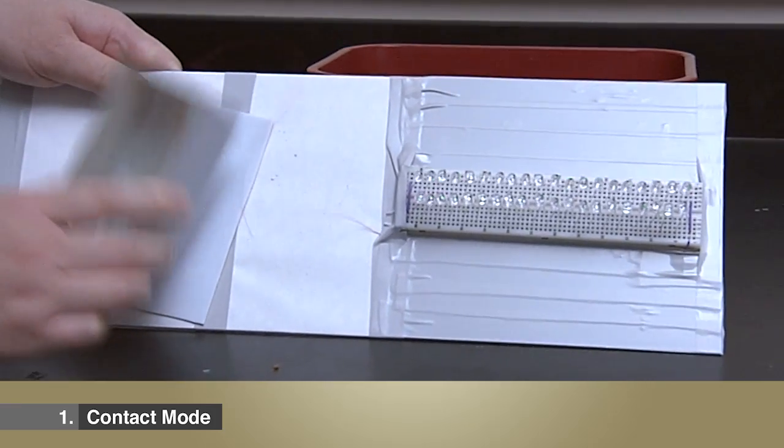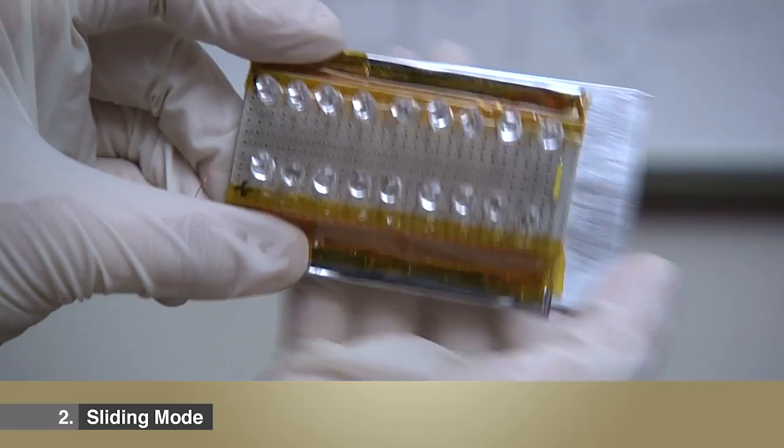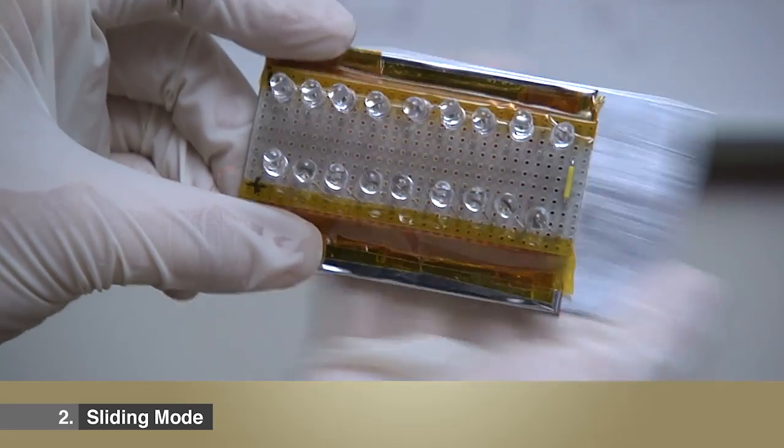One mode is physical contact, and the other one is sliding. These are the two basic modes we use for electricity generation. This is called tribo electrification, or scientifically called contact electrification. And this occurs for almost any materials we know today.